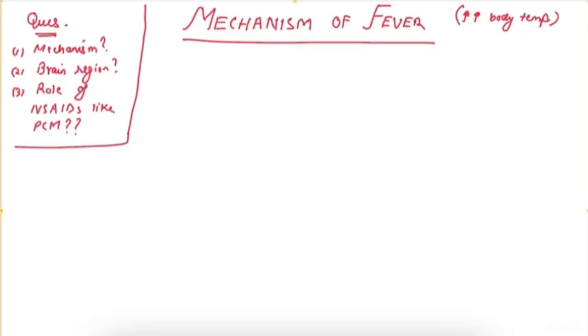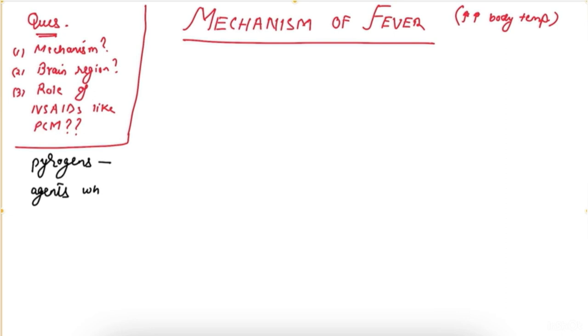Hello dear students, today we are going to study the mechanism of fever, that is increased body temperature. We are going to study how fever occurs, which brain region is involved in fever, and what is the role of NSAIDs. Fever is caused by pyrogens, which are agents that cause fever.